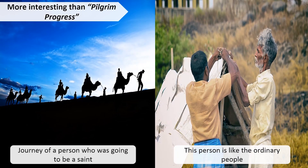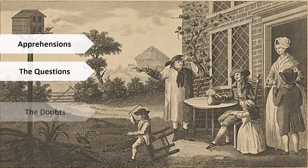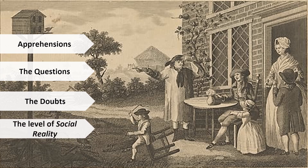Robinson Crusoe is more interesting than Pilgrim's Progress because that was a journey of a person going to be a saint, whereas this person is like us — ordinary people. Therefore the apprehensions, questions, doubts, and suspicions that all of us have as individual human beings are present in Robinson Crusoe too. This makes it a tale at one level: the level of social reality.